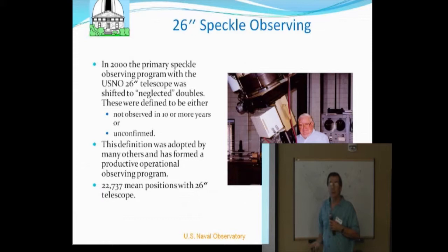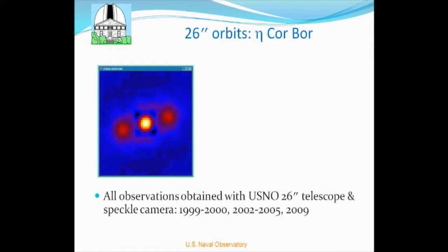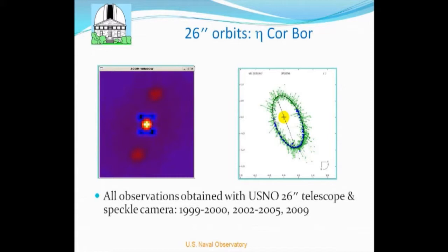To show that most of the stars we look at, of course, are wide, but to show that we can actually do things that, over the course of time, actually move, which is really nice on a small telescope. And there's an orbit that came out using that data plus, of course, a lot more.